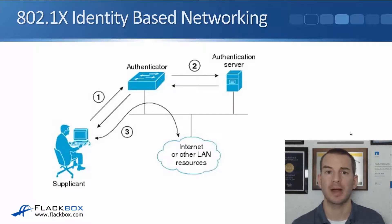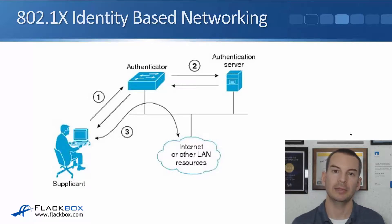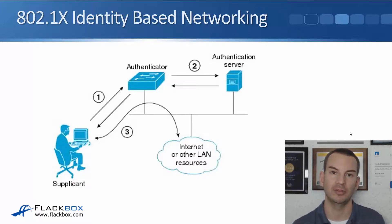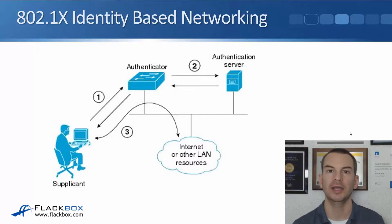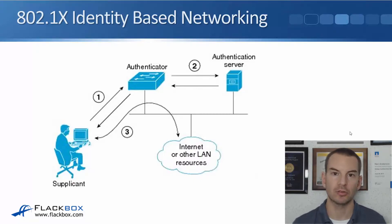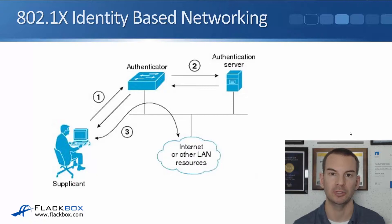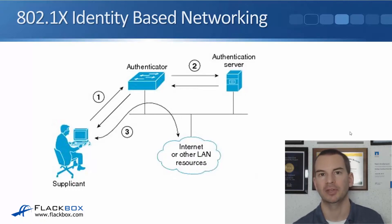Once the username and password has been authenticated, that can be mapped to a VLAN as well. The authentication server can then send that information down to the authenticator switch, and it will update the port that the client is plugged into with the correct VLAN. At that point, it acts just like a normal switch port in the correct VLAN, and the user gets their normal access to the network. So 802.1x is used to authenticate your users on the network — they don't get access at all until they put in a valid username and password, and at that point they get given the relevant access for that particular user.